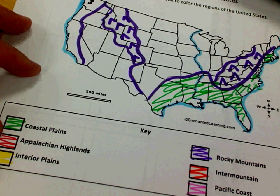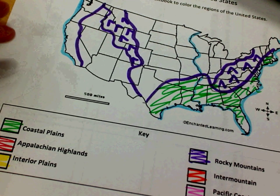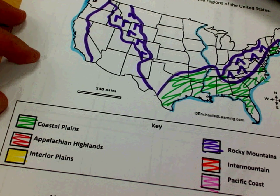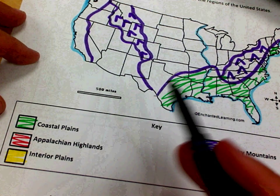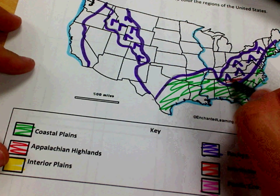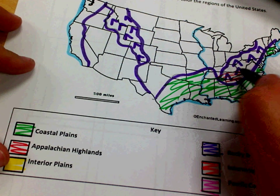Moving on, we see the Appalachian Highlands. I'm going to have my little red marker here and color this in real quick.